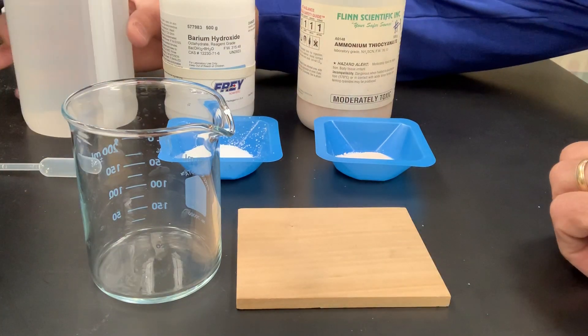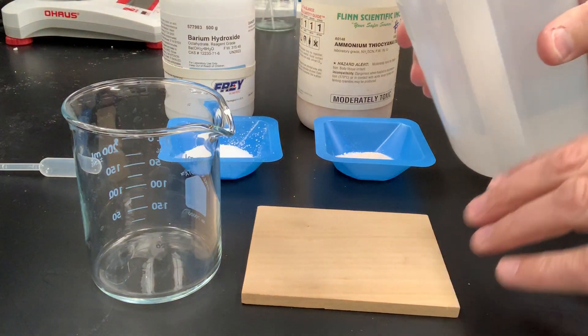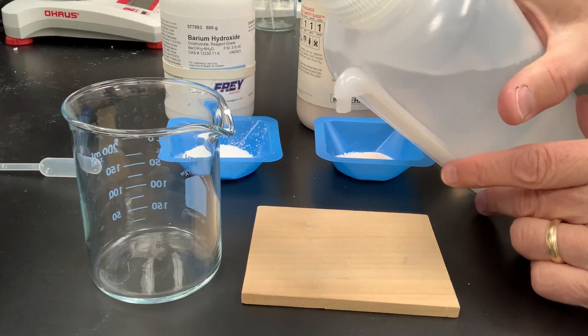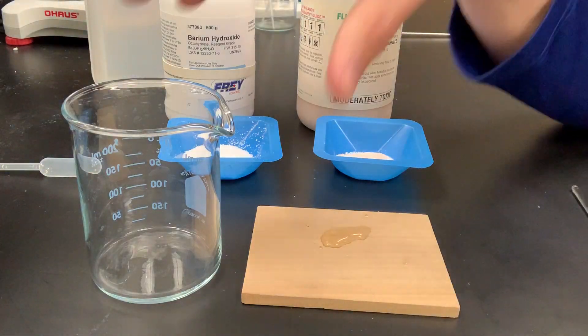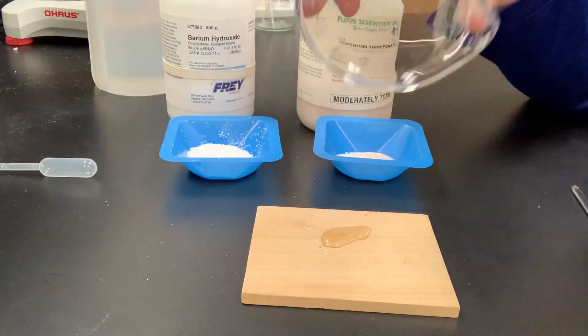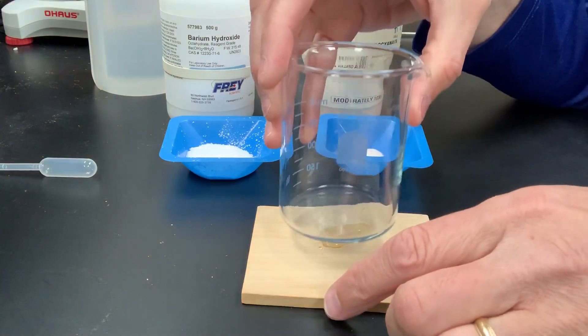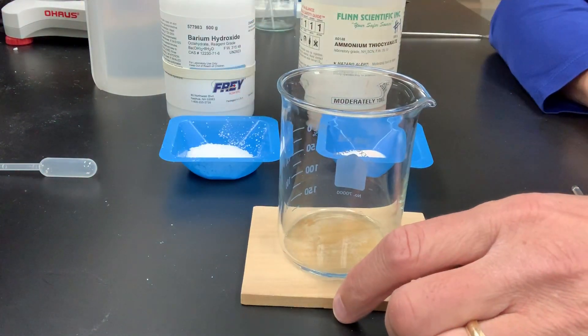So I'm going to take a block of wood, boys and girls, and just put a few drops of water on that block of wood. Not too much. And I have a beaker that's empty and it's dry. I'm just going to put that beaker on that block of wood.